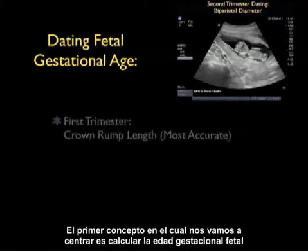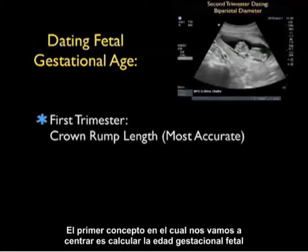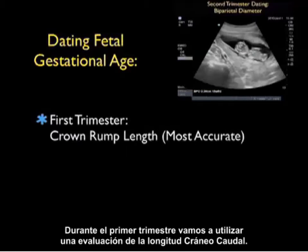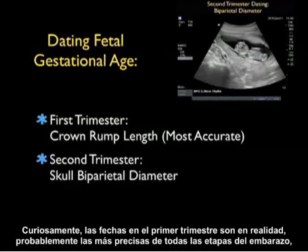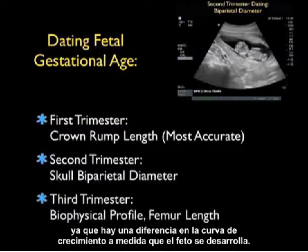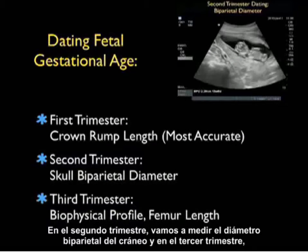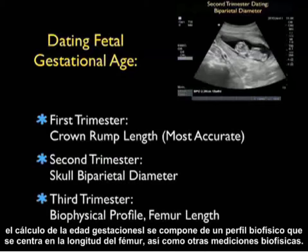The first concept we'll focus on is dating fetal gestational age. In the first trimester, we use an assessment of the crown rump length. Dating in the first trimester is actually the most accurate during all phases of pregnancy. In the second trimester, we'll measure the skull biparietal diameter, and in the third trimester, dating is composed of a biophysical profile focusing on femur length as well as other biophysical measurements.